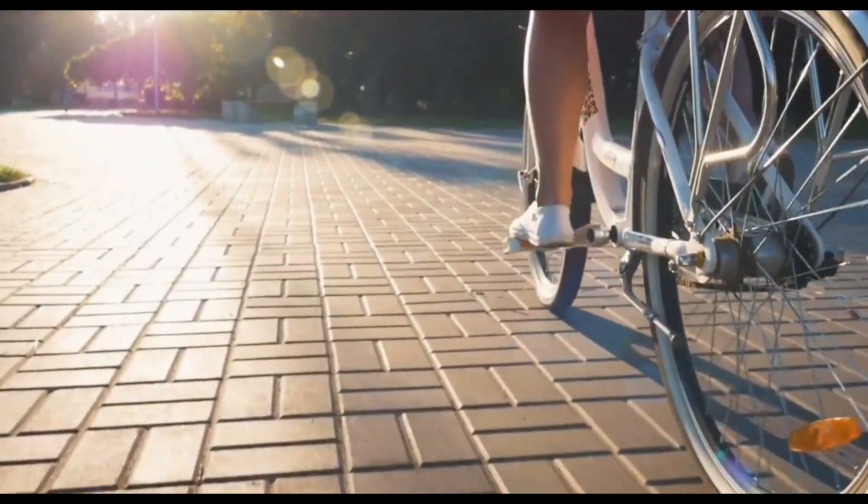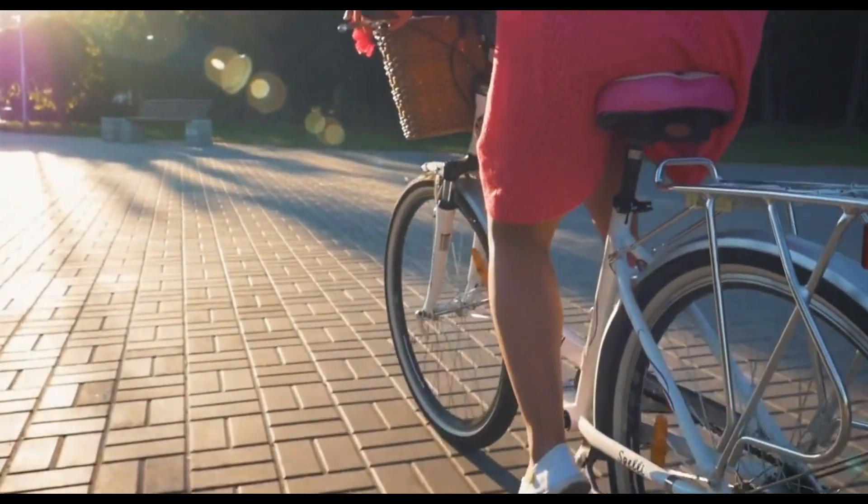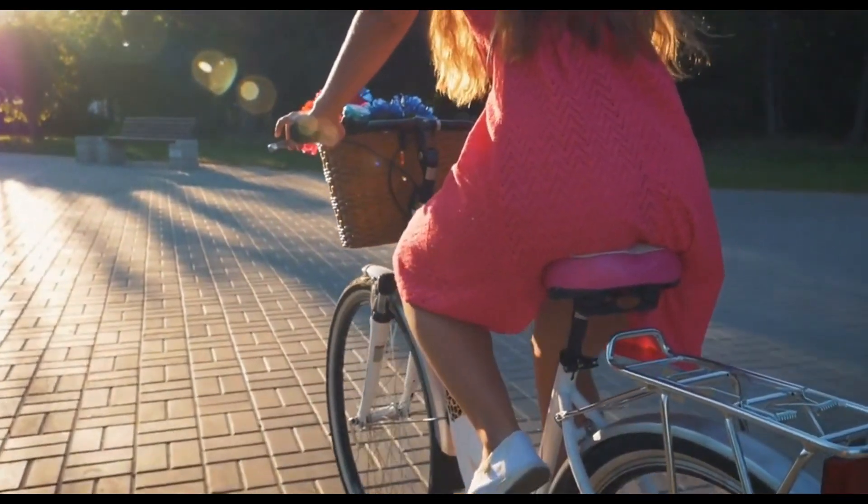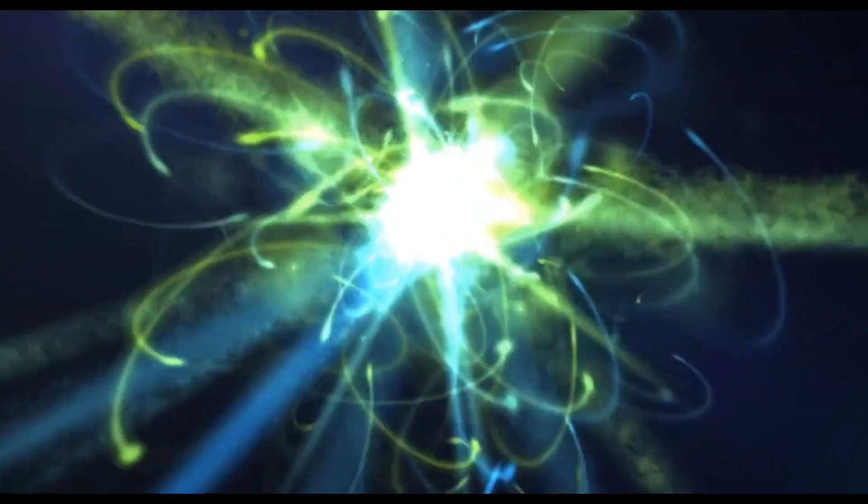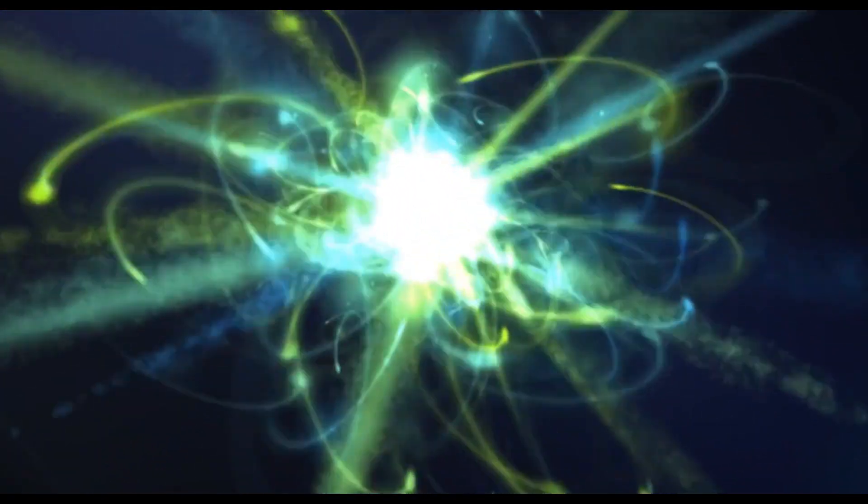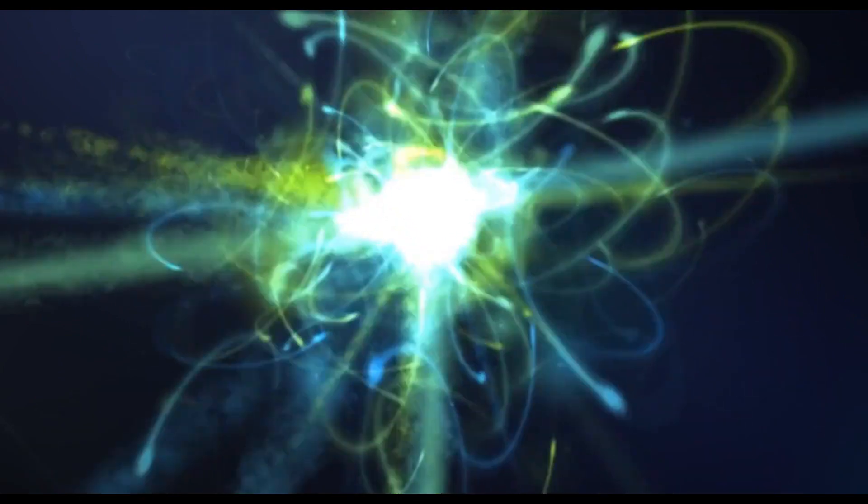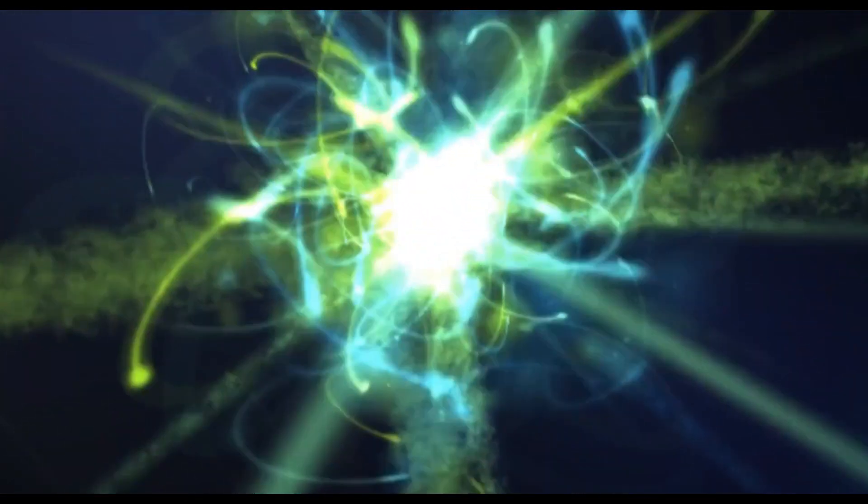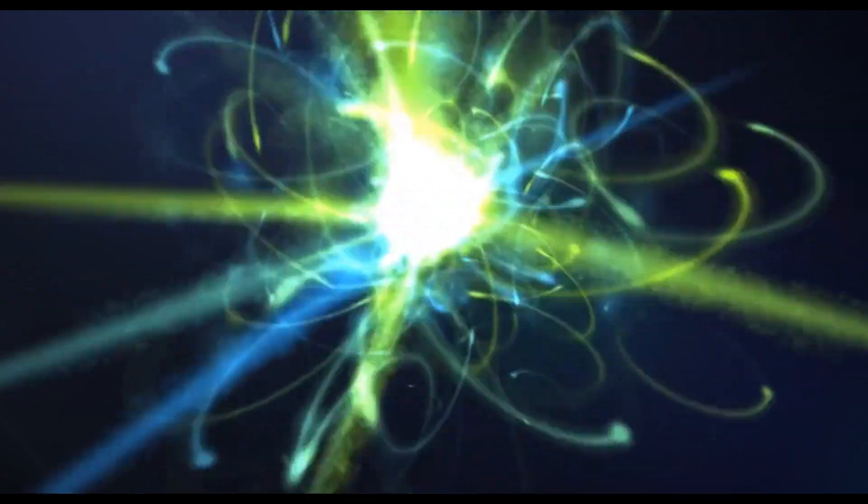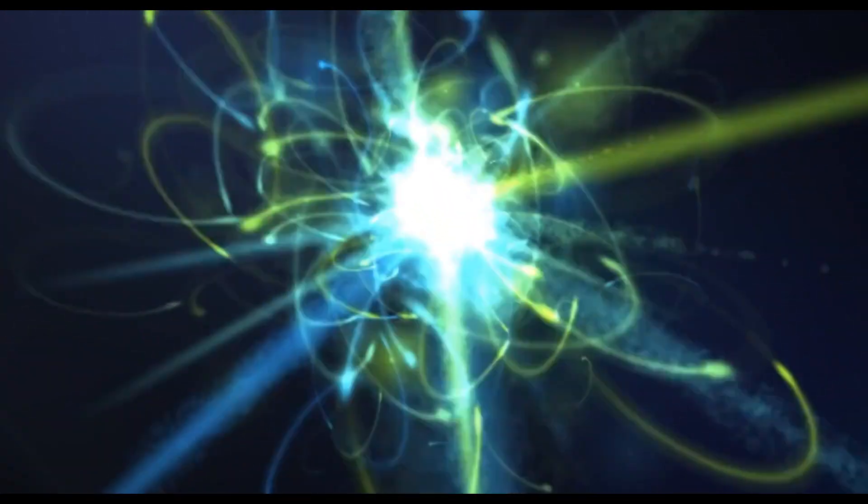But angular momentum is not only associated with macroscopic objects like tops, frisbees, and bicycles. It is also associated with microscopic objects like electrons, protons, and photons. These particles also have some amount of rotation around some axis. And this rotation is what we call spin.